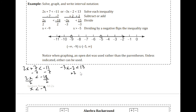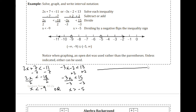For the second inequality, we add 2, then divide by negative 3, and we have to flip the inequality because we're dividing by a negative number. So we've solved both inequalities. Graphing the first gives us all the x that are less than negative 9, and then all the x that are greater than negative 5.